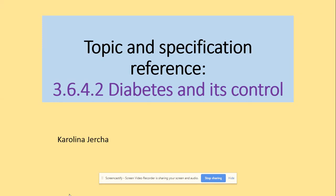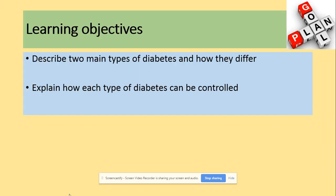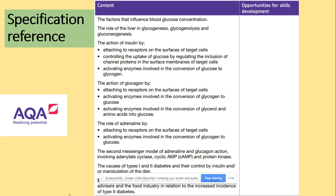Hi guys, welcome to Diabetes and its Control. We will be looking at the two types of diabetes and how they can be controlled. In our previous videos, we covered all aspects of the specification. We now only have types of diabetes — type 1 and type 2.